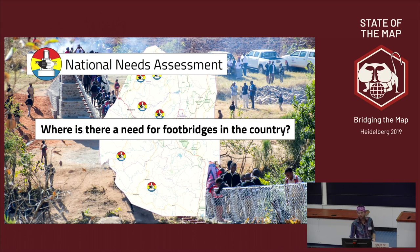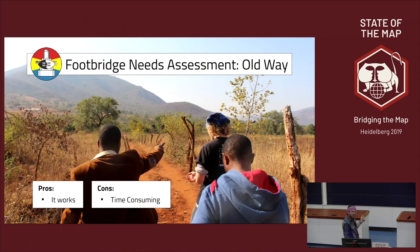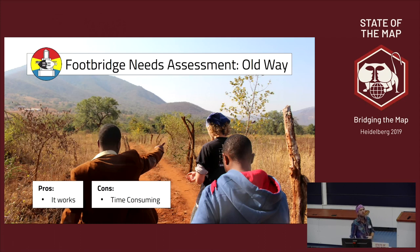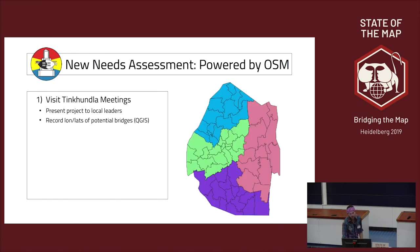When you perform a national needs assessment you've got to figure out where there's a need for footbridges across the entire country. The old way was just hearing about a footbridge need through the grapevine, then visiting, meeting people, going to the bridge site, and doing all the technical analysis. It works and it's great, but it's really time consuming. If we want to figure this out at country scale, we need a new approach powered by OpenStreetMap.